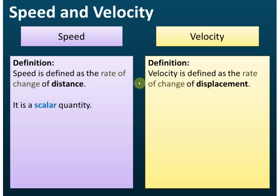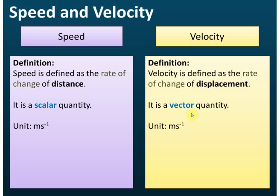Speed is a scalar quantity — since distance is a scalar quantity, the rate of change of distance is also a scalar quantity. Velocity is a vector quantity — since displacement is a vector quantity, the rate of change of displacement is also a vector quantity. The next thing to know is their unit: both speed and velocity have the unit meter per second.